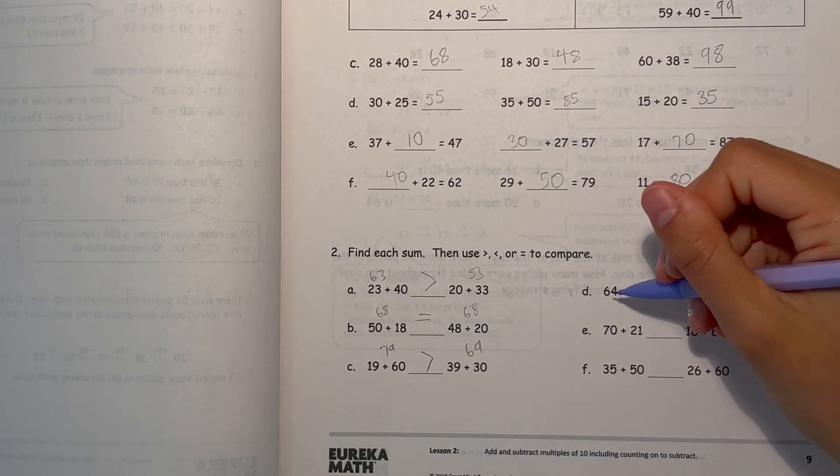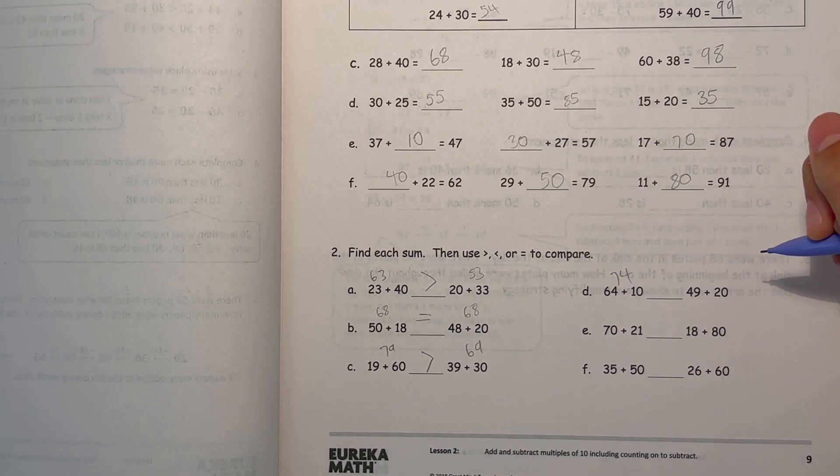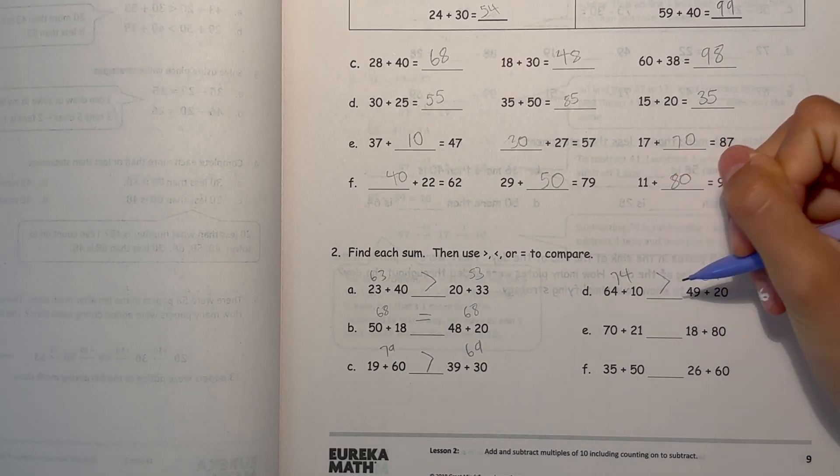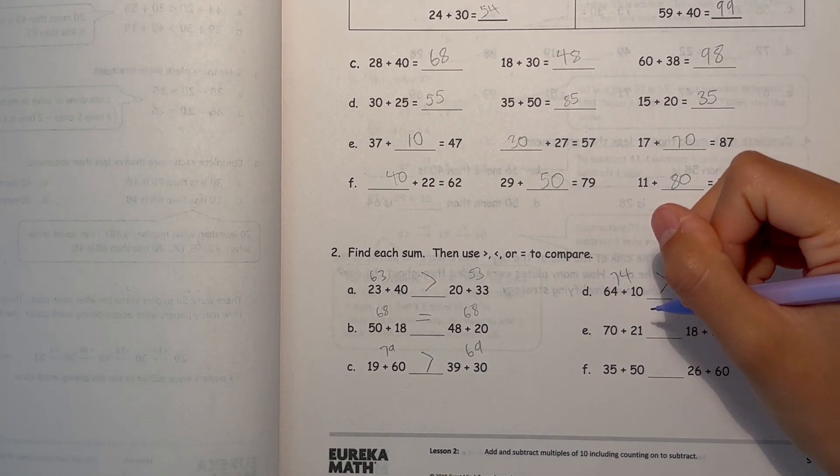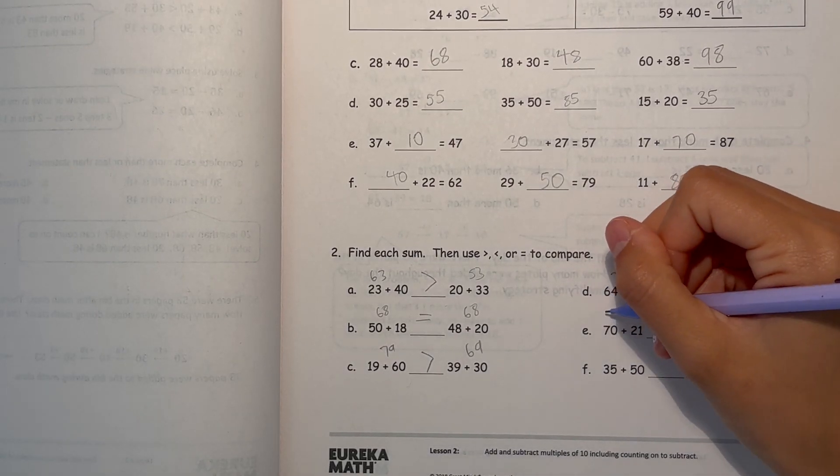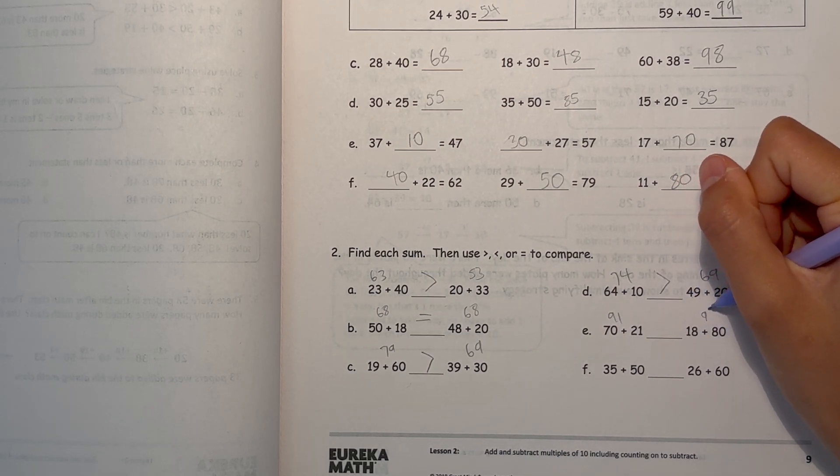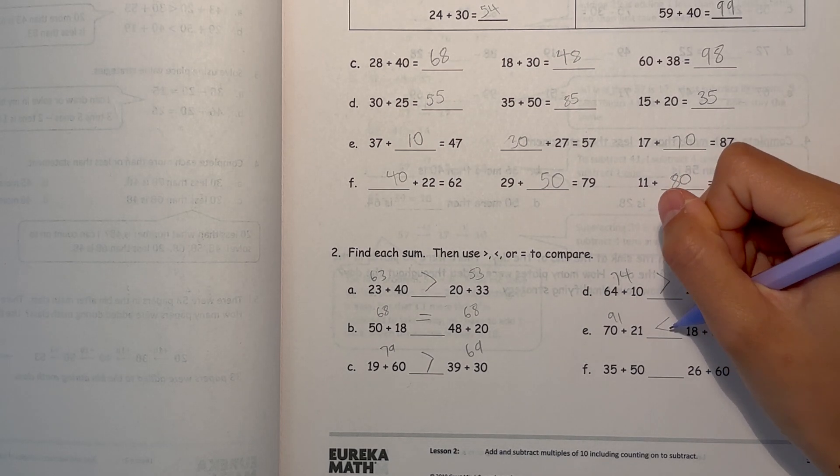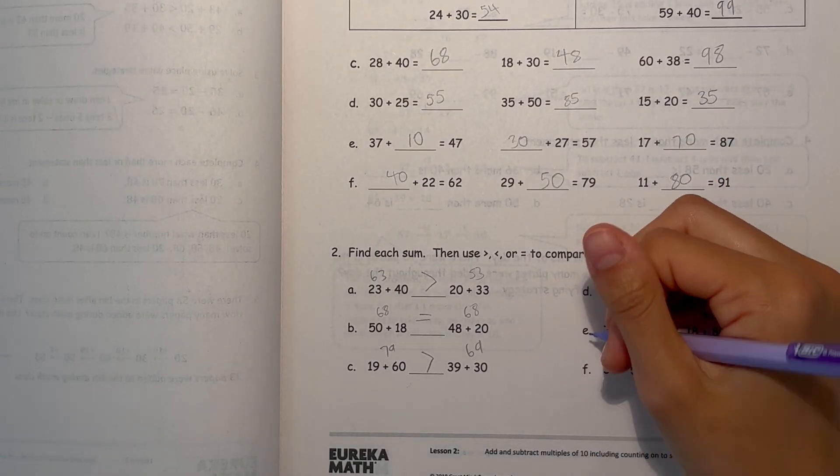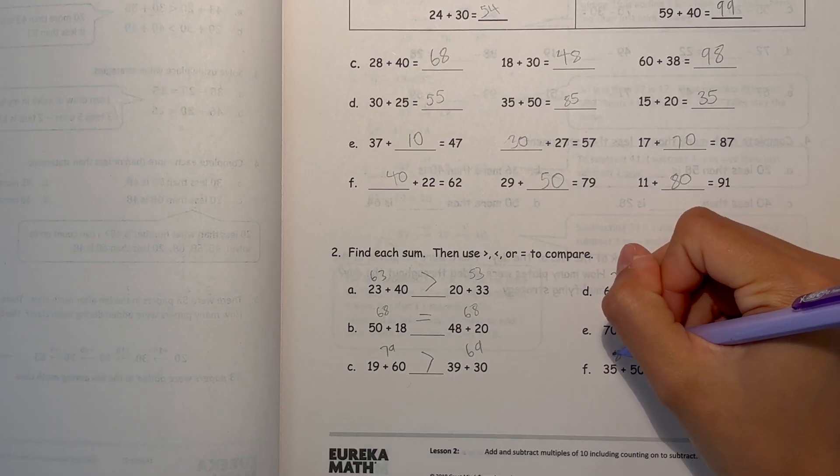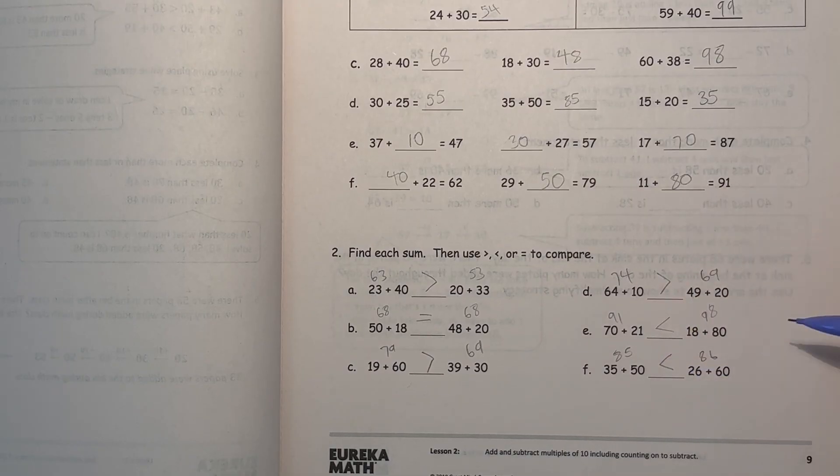And now D, 64 plus 10 is 74. And 49 plus 20 is 69. So 74 is greater. Alright, and E, 70 plus 21 is 91. And 18 plus 80 is 98. So 98 is greater.